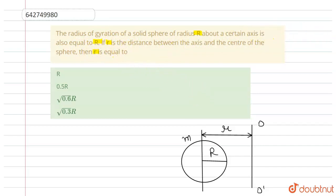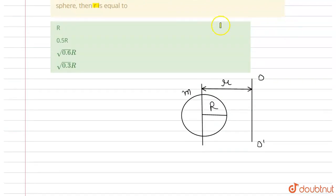So first of all, we will write the radius of gyration of sphere about O O dash is equal to R.